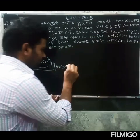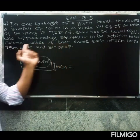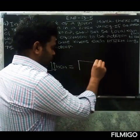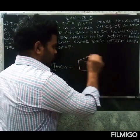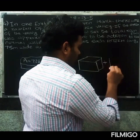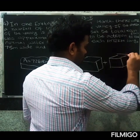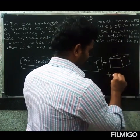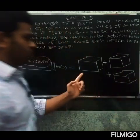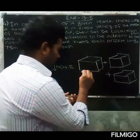The total rainfall should equal the addition of the normal water of three rivers. The rivers are cuboid in shape. For all three rivers, the dimensions are: length is 1072 km, breadth is 75 meters wide.